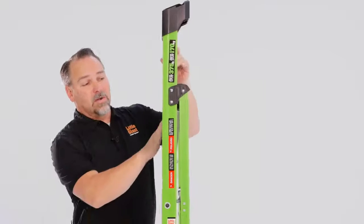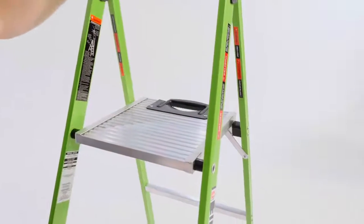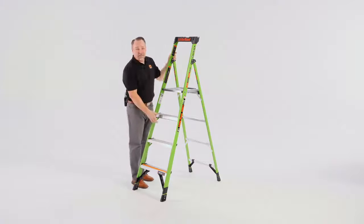To open the ladder, we're going to take this platform with our dominant hand, push it down, and you'll both see and hear it lock into place. Now your Mighty Light is safe to climb.